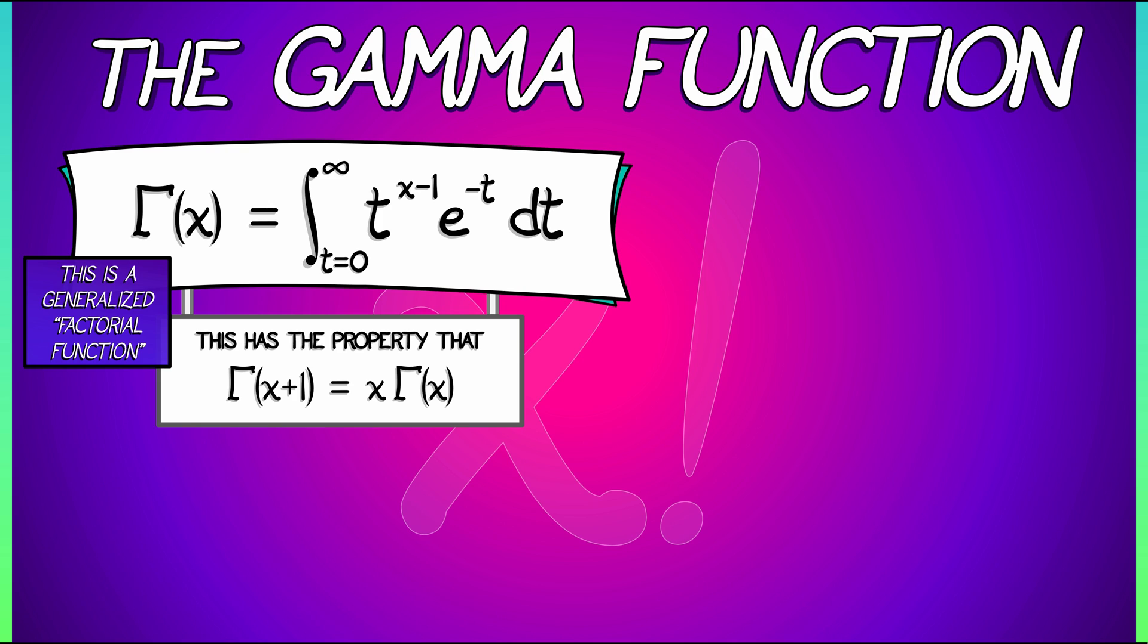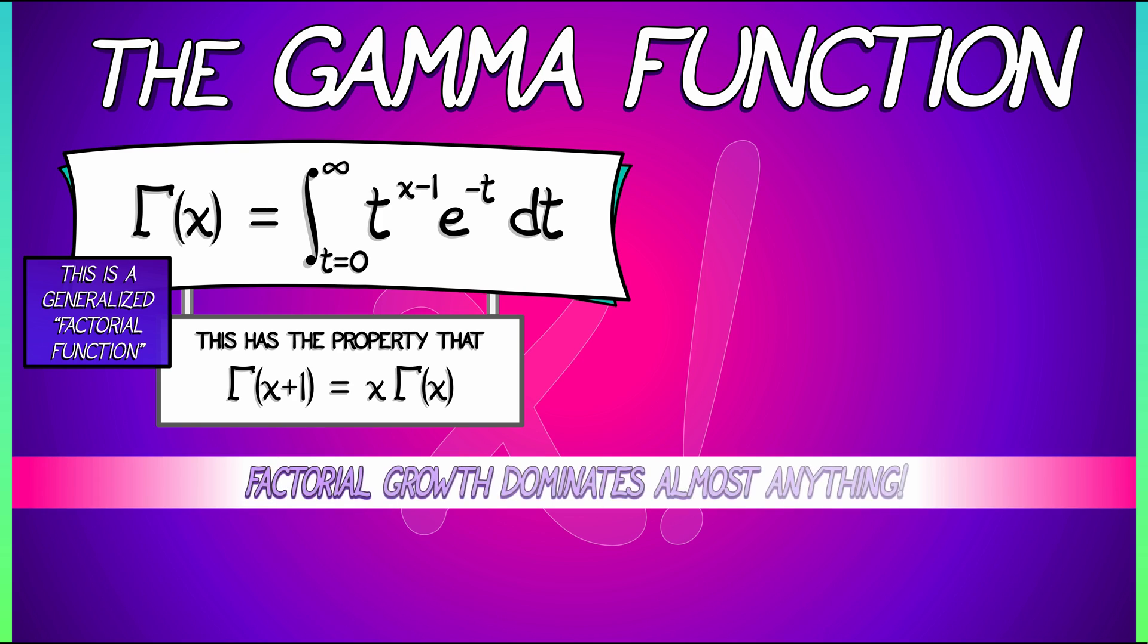This factorial growth dominates almost any other type of growth that you are going to see organically. Well, how do we show something like that? How do we show that factorial growth beats exponential growth?